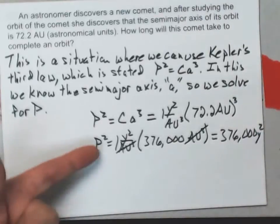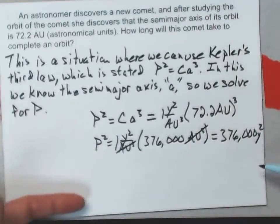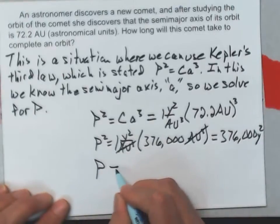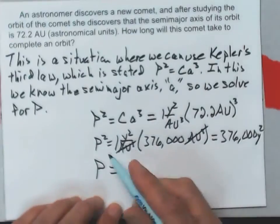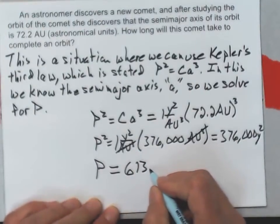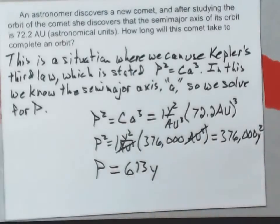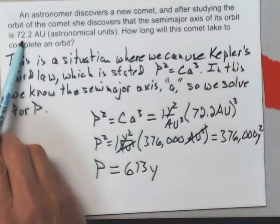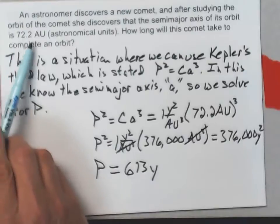Well, that's the square of the period. If I just take the square root of both sides, P equals, I would get 613 years. So that comet will take 613 years to complete an orbit, if we've got its semi-major axis measured that precisely.